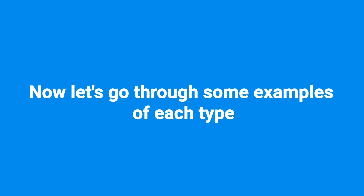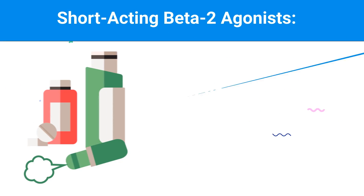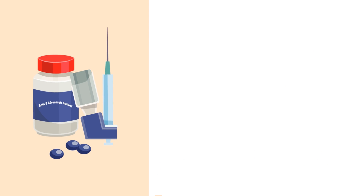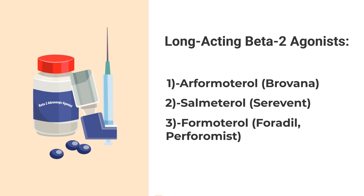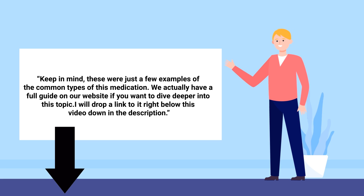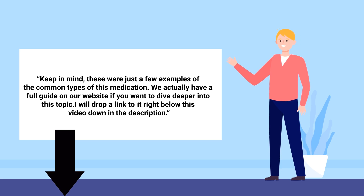Now let's go through some examples of each type. Some examples of short-acting beta-2 agonists include albuterol, levalbuterol, and metaproterenol. Some examples of long-acting beta-2 agonists include formoterol and salmeterol. Keep in mind these were just a few examples of the common types of this medication. We actually have a full guide on our website if you want to dive deeper into this topic — a link is provided in the description below.